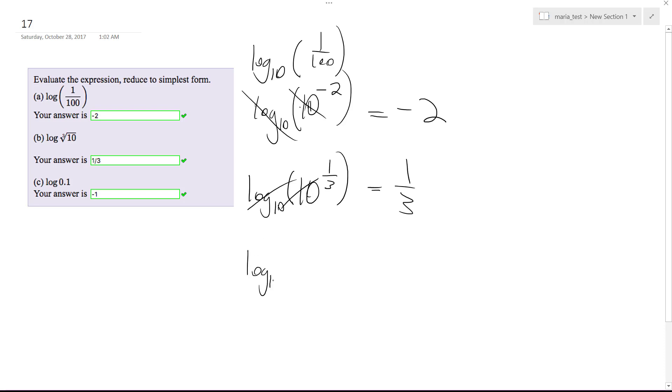So this equals 0.1, which is the same thing as 1 over 10, which is equal to log base 10 of 10 to the negative 1. These cancel off and we're left with negative 1. I hope that helps you see this. Thanks for watching.